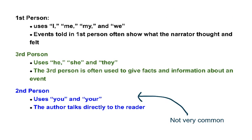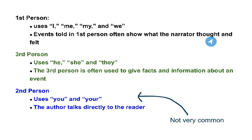An author might use a first-person point of view in order to talk about an event. First-person writing uses the words I, me, my, and we. Events told in first-person often show what the narrator thought and felt.